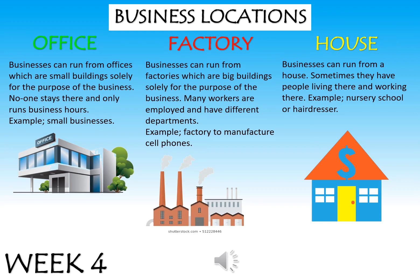A factory, shown in red, is a big building solely for the purpose of the business. Many workers are employed and there are different departments. An example is a factory that manufactures cell phones — your latest phone or tablet is made in a very big factory with lots of workers doing different things. The last location is a house. If it's a very small business, you run it from home — you don't have enough money yet for an office but you're still making money. An example would be a nursery school or a hairdresser running from her house.